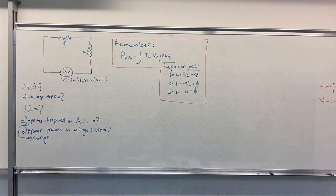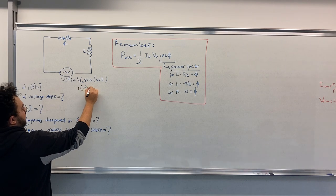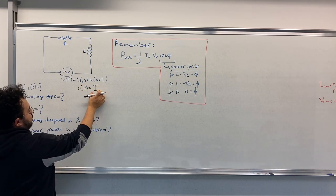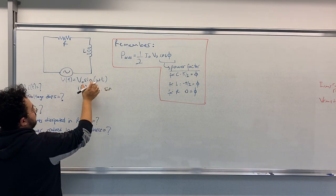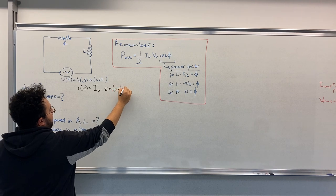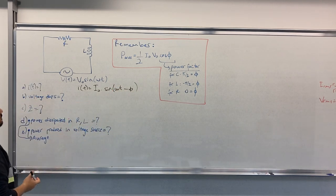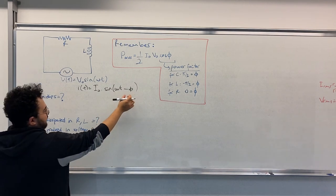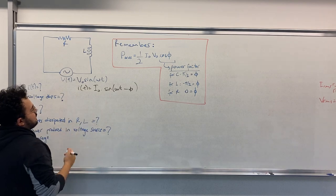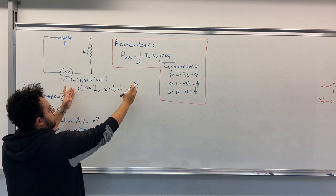Initially we need to find the current in the circuit. If you remember, we can assume that I equals magnitude times sin(ωt) minus a phase. This phase difference is produced because of the inductance.